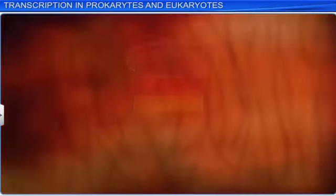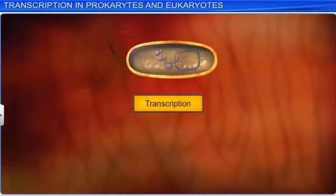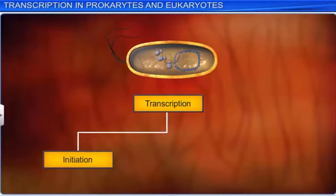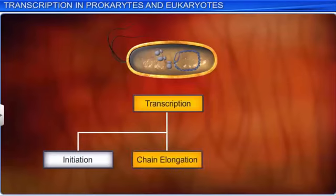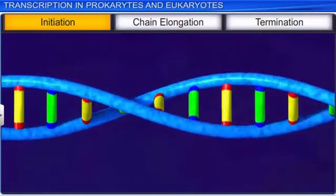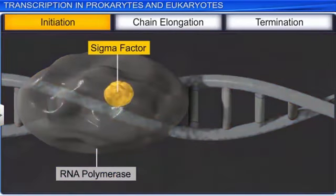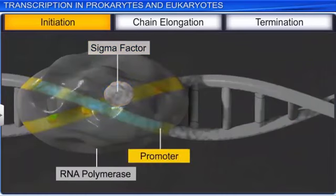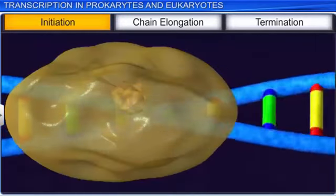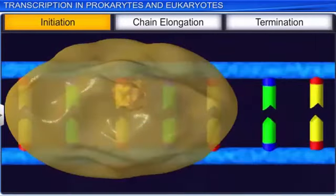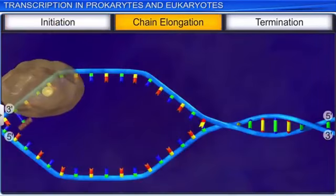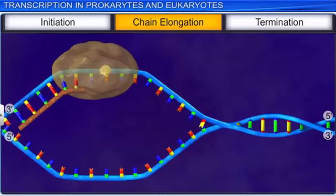Transcription, the first process in protein synthesis, occurs in three stages: initiation, chain elongation, and termination. In the first stage, RNA polymerase along with the initiation factor, denoted as sigma, binds to the promoter sequence in DNA and initiates transcription. This helps in the opening of the DNA helix and separates the two DNA strands. Now the second stage of transcription, called elongation, begins.